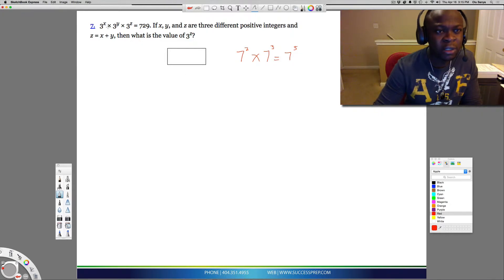So based on that, we need to bring that into function here. When I look at this 3 to the x, 3 to the y, 3 to the z, because they are all multiplying and the bases are the same, they're all 3s, all you have to really focus on is adding the x plus the y plus the z. So that needs to be done.